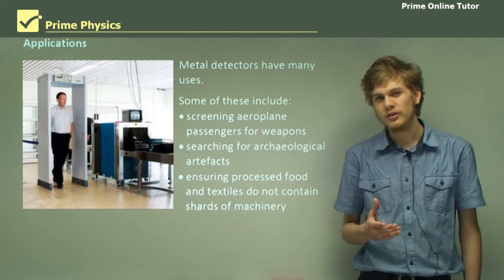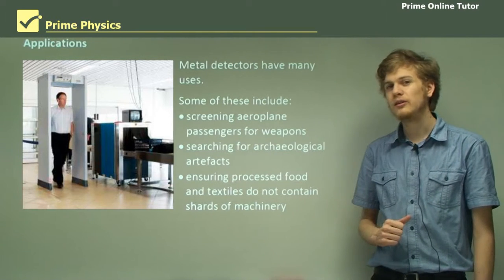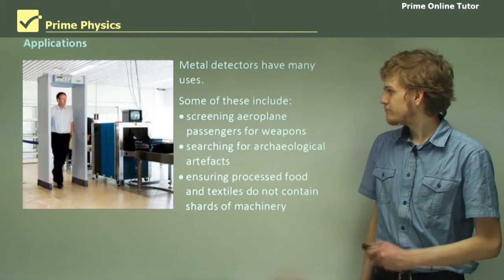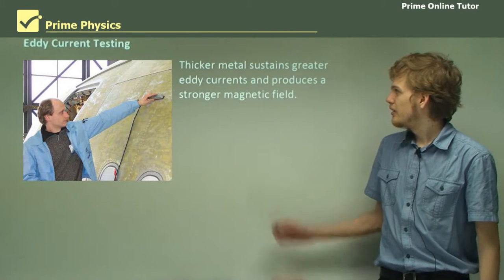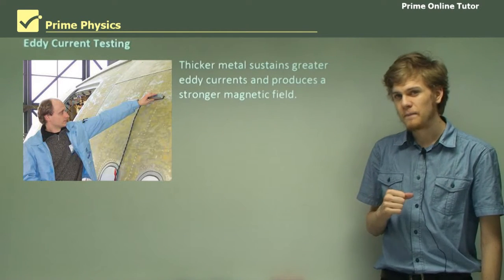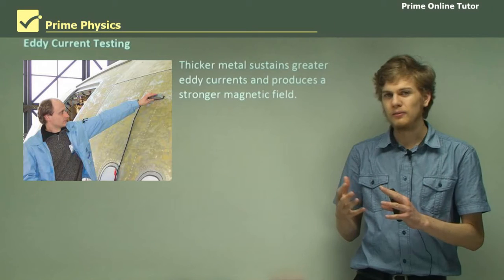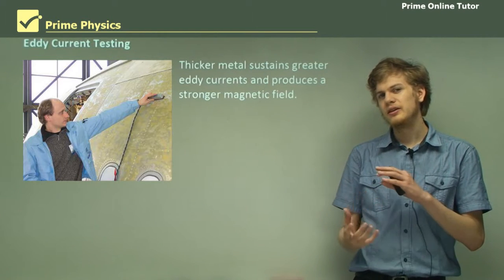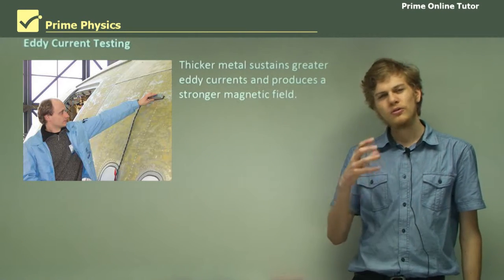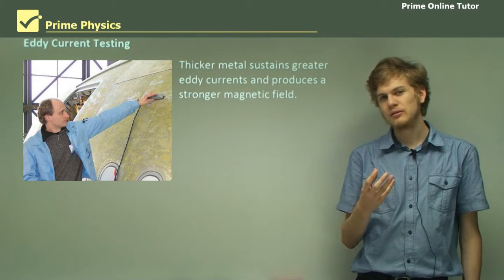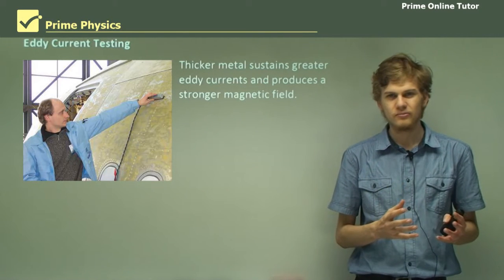In the textile industry, the danger might be from lost or broken needles. Eddy current testing is another way of detecting metal, or rather detecting different sorts of metal. We know that if we have a larger piece of metal, we'll get more eddy currents.